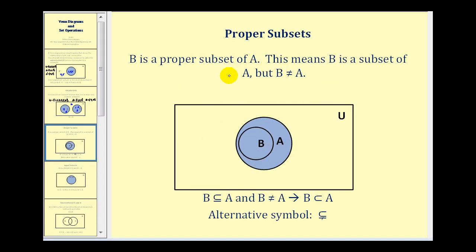In this diagram, B is a proper subset of A. This means that B is a subset of A, but B does not equal A. Using the symbols discussed in the previous video, we could say that B is a subset of A and B does not equal A, therefore B is a proper subset of A. And instead of using this symbol for a proper subset, sometimes you'll see this other symbol used.